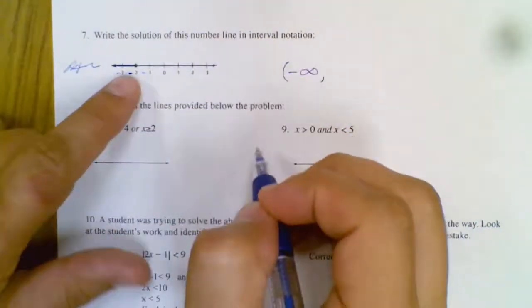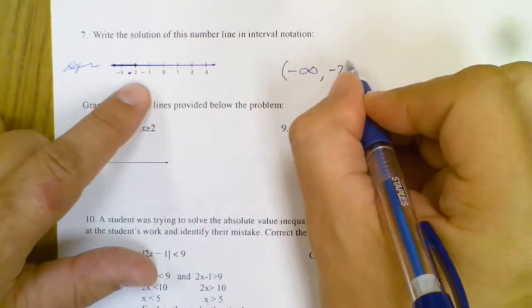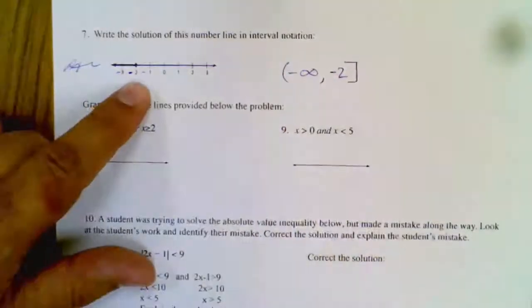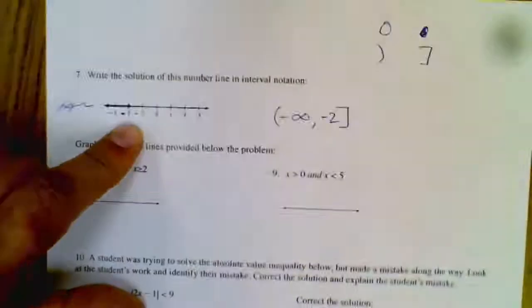And to the right, the biggest number is negative 2. And since it's a closed circle, I use a bracket. Remember, closed circles go with brackets, open circles go with parentheses.